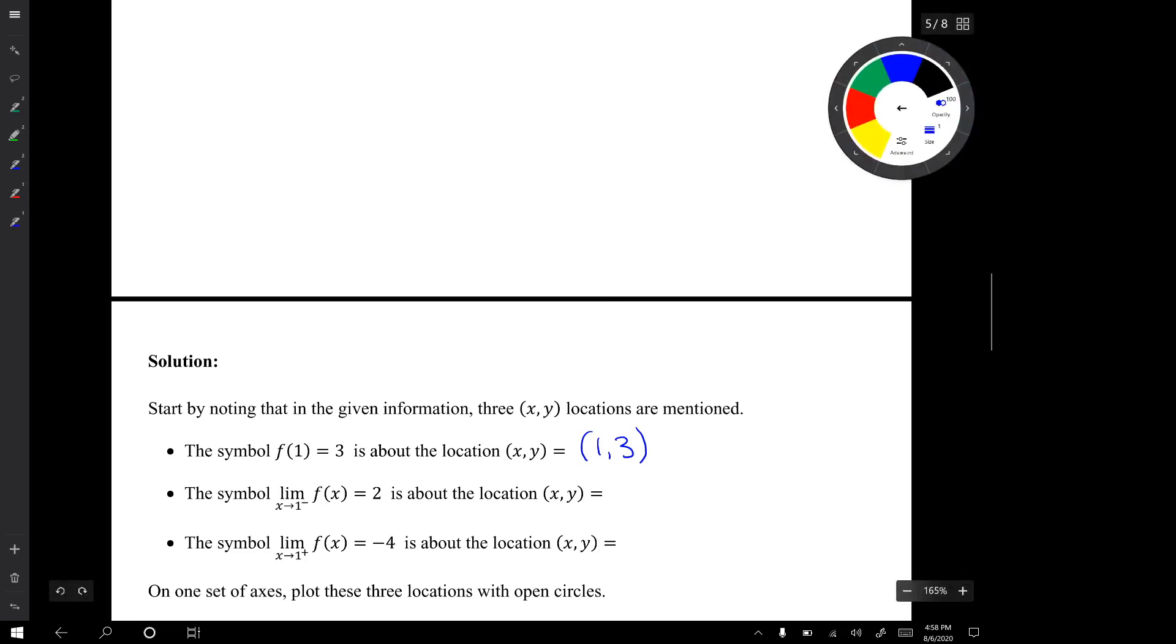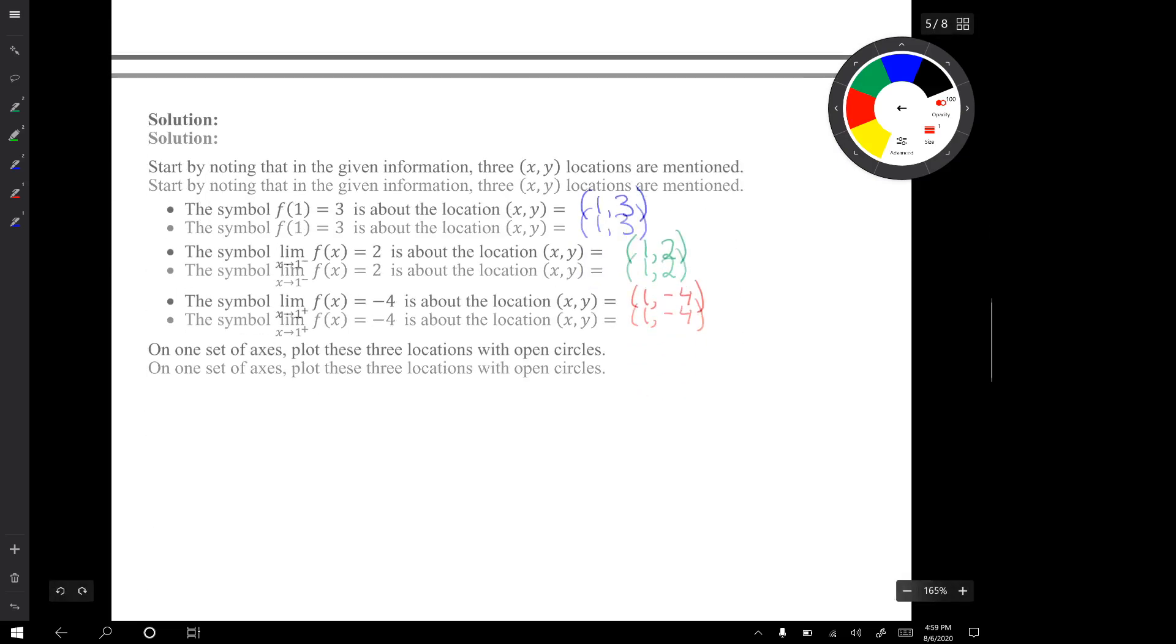In this symbol the limit as x approaches 1 from the left of f(x) is 2. That's about a location as well. It's about the location well that number 1 is an x coordinate and that number 2 is a y coordinate. And this third symbol is also about a location. This symbol 1 is the x coordinate and this symbol negative 4 is the y coordinate. So there are three locations. So the first job is to identify those locations and then plot them on a single set of axes.